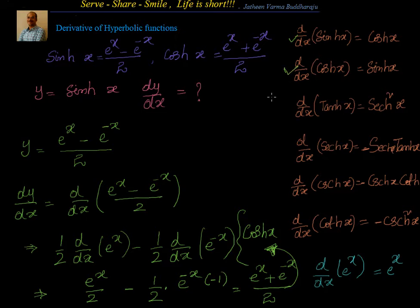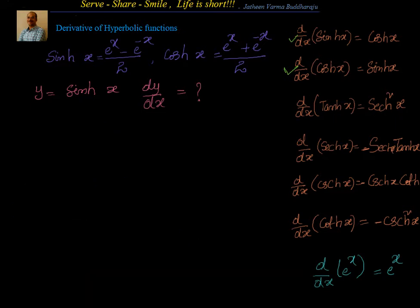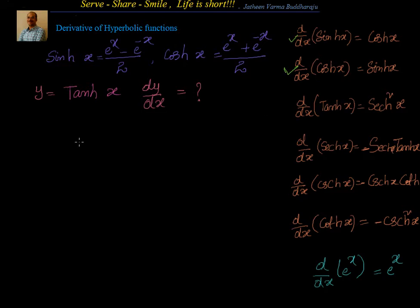Now let's go to the derivative of tanh(x). We can do this in two ways: one, we can directly substitute the value of tanh(x) as (e^x - e^(-x))/(e^x + e^(-x)) and apply the u/v formula, or we can write tanh(x) as sinh(x)/cosh(x).